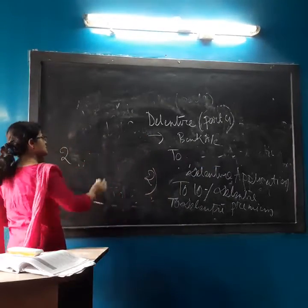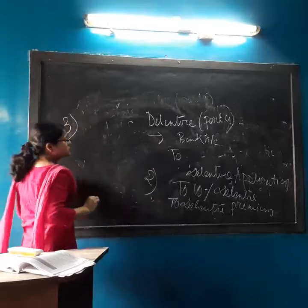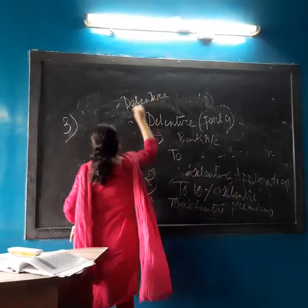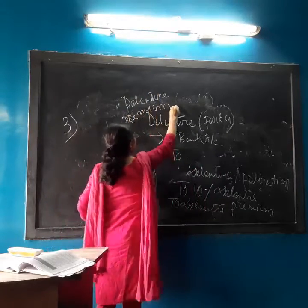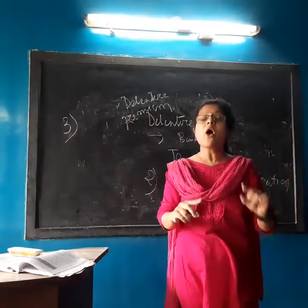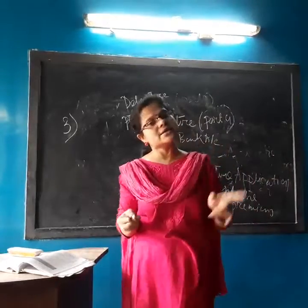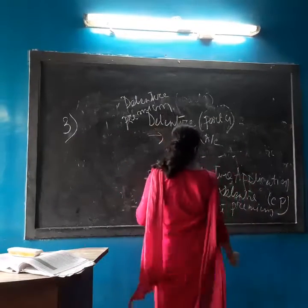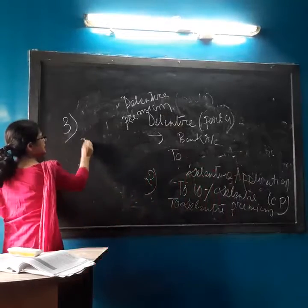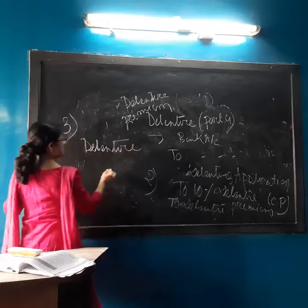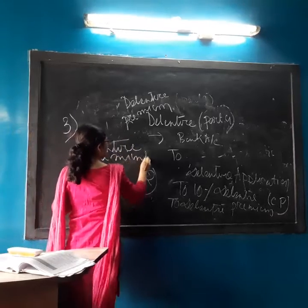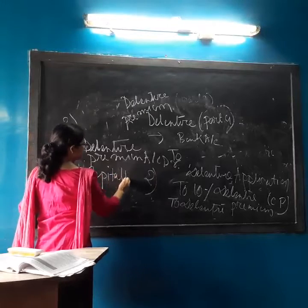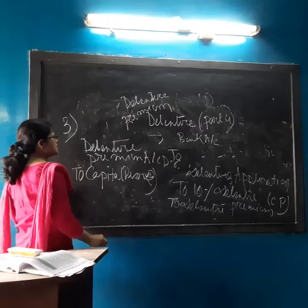The third entry is very important because debenture premium is a capital profit. Please remember: debenture premium is a capital profit, whereas issuing a debenture at discount is a loss. Since debenture premium is a capital profit, it will be transferred to Capital Reserve. So the third entry is: Debenture Premium Account debit to Capital Reserve.